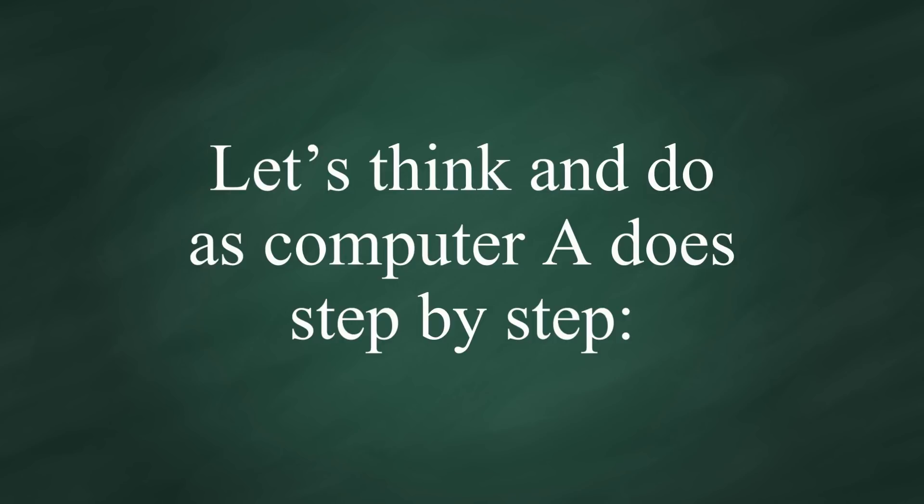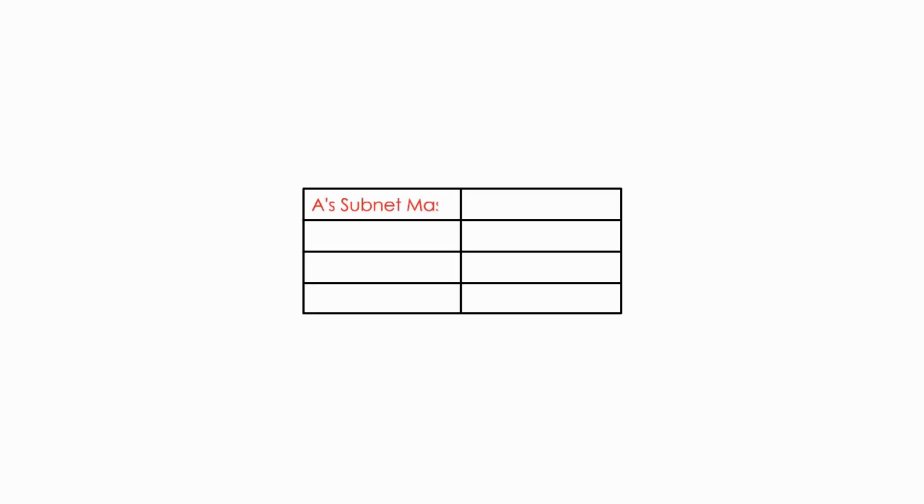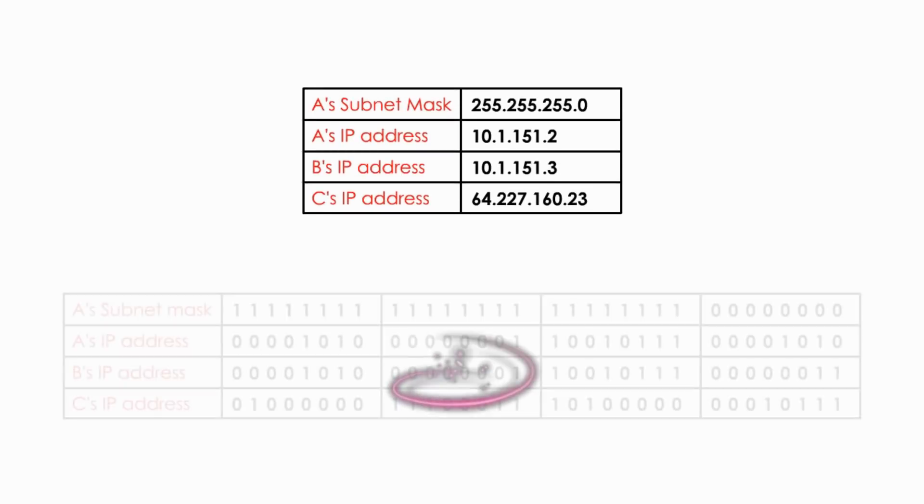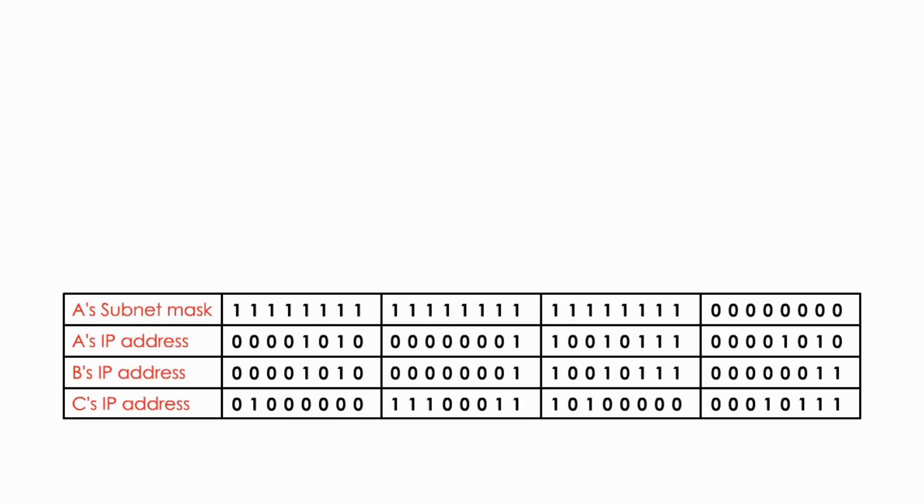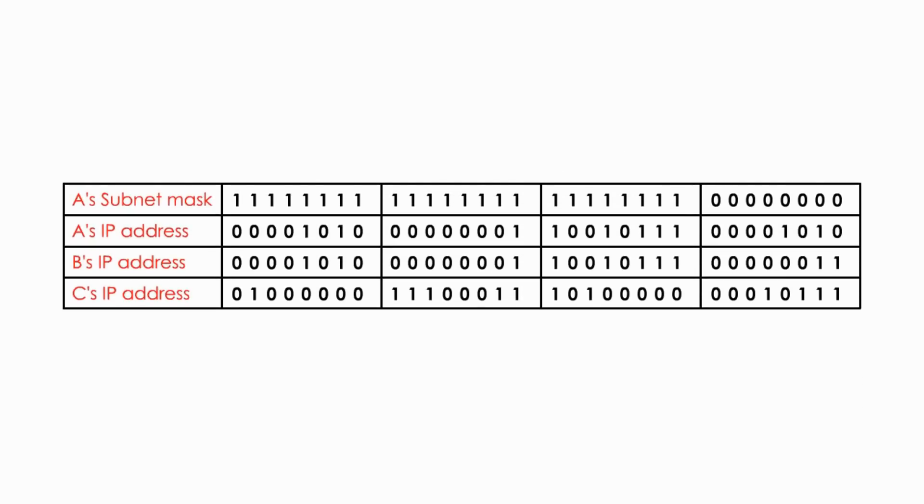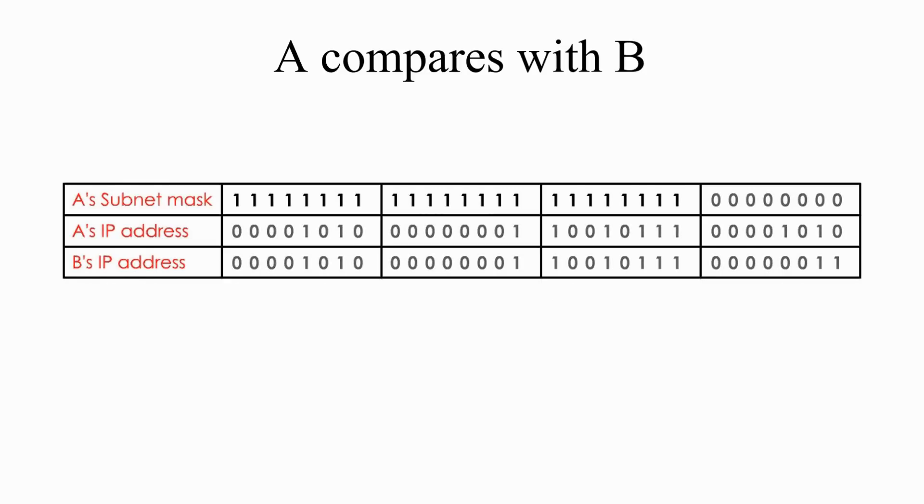Let's think and do as computer A does, step by step. Let's list computer A's subnet mask, its IP address, computer B's IP address, and computer C's IP address. And then we convert these decimal numbers into binary numbers because computer A is dumb, and it only knows binary number 0 or 1. Next, let's just compare computer A's IP address with computer B's IP address only. But we compare them with the help of subnet mask.